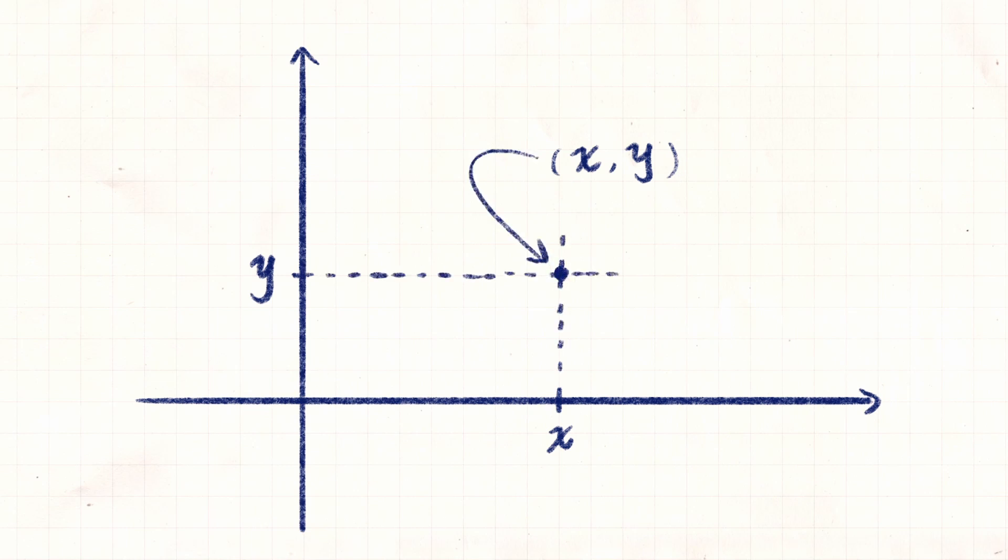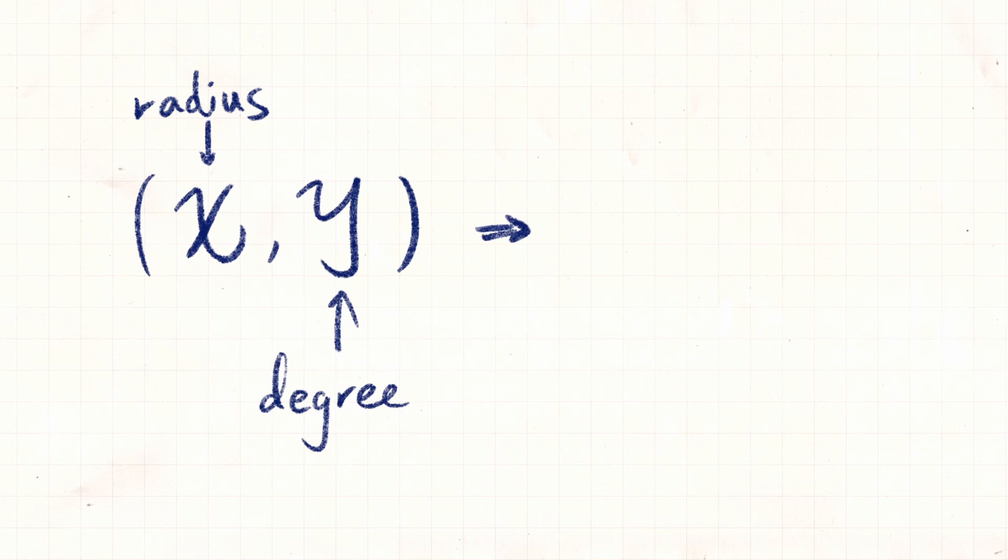Now, in polar coordinates, however, the components have different meanings. The x now represents the radius and y is the degree. So to differentiate from Cartesian coordinates, we often use r and theta to represent a polar coordinate.